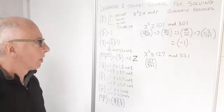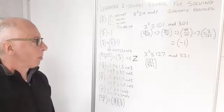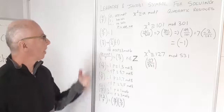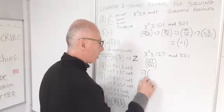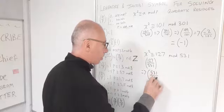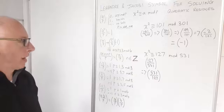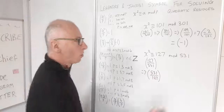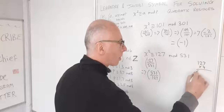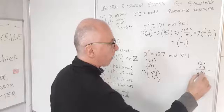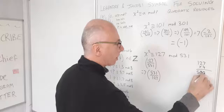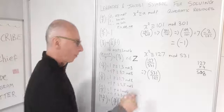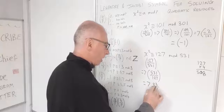127 looks pretty much like a prime number. I'm going to apply the flip rule, which maps this to (531/127). Using the periodic rule, I can deduct a multiple of 127 from 531. 127 times 4 is 508, and 531 minus 508 leaves me with 23. So I'm now left with (23/127).